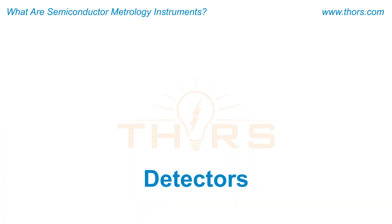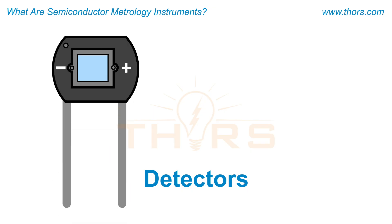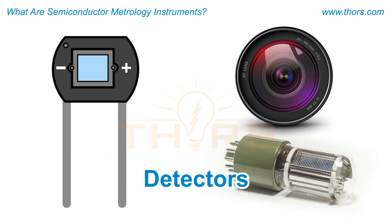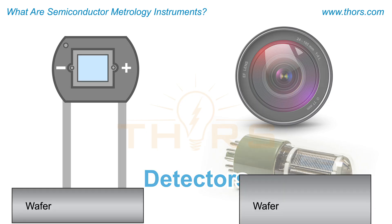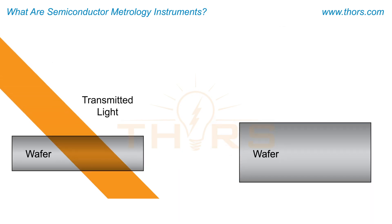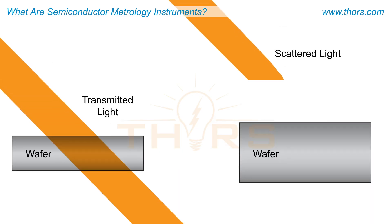Depending on the source, different detectors such as photodiodes, cameras, or photomultiplier tubes are used. The function of a detector is to capture and measure the transmitted light that travels through the wafer or the scattered light that is reflected off the surface of the wafer.